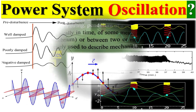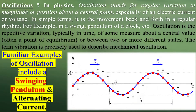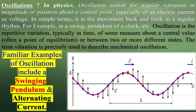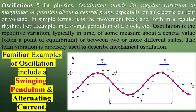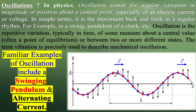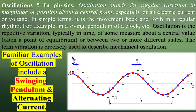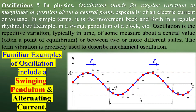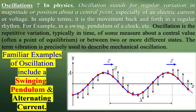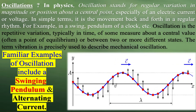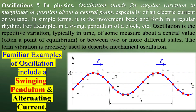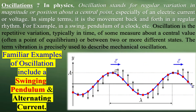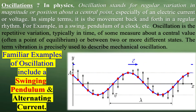Objects that show motion around an equilibrium point are known as oscillators. Examples of oscillation include the tides in the sea, the movement of a simple pendulum in a clock, and the vibration of strings in guitars and other string instruments.